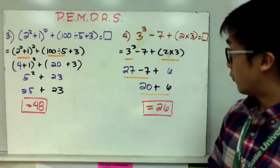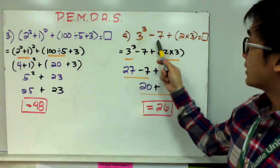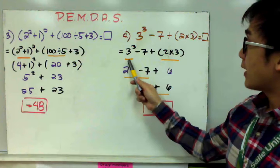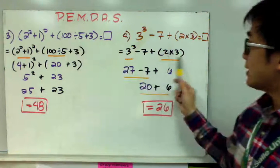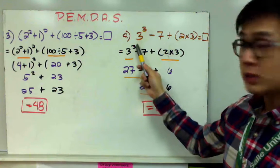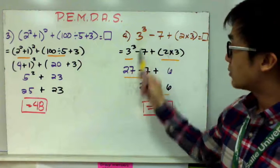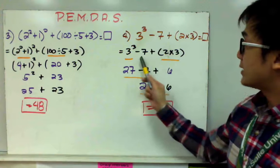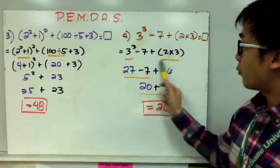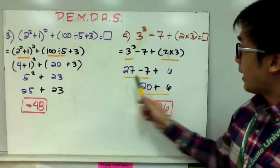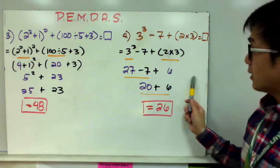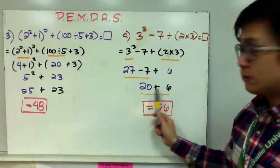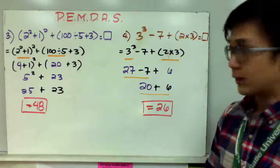For example number four, I have 3³-7+(2×3). I evaluate the exponent and the parentheses: 3³=3×3×3=27, and 2×3=6. Bringing down the -7, I now use the left-to-right method: 27-7=20, and 20+6=26.